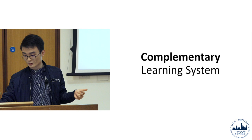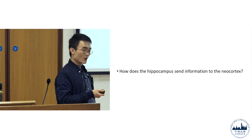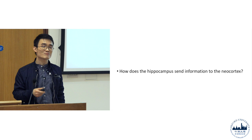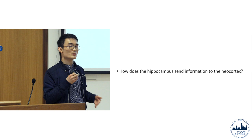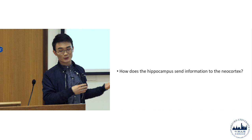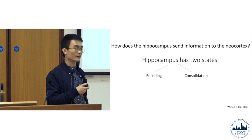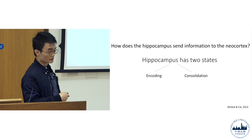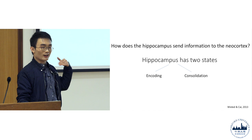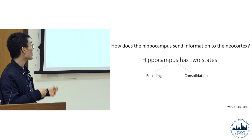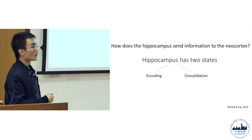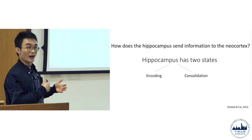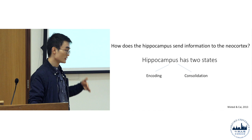The big question is: how does the hippocampus send information to the neocortex? It is beneficial for memories to be stored in the neocortex, so you want memories from the hippocampus to migrate there. Neuroscientists and psychiatrists have spent years trying to find out how this happens. Basically, the hippocampus has two states: an encoding state and a consolidation state. When there is sensory input — right now you are hearing new information — your hippocampus is trying to encode information from my speech. And when there is a stop of sensory input, the hippocampus will start to send information into the neocortex.